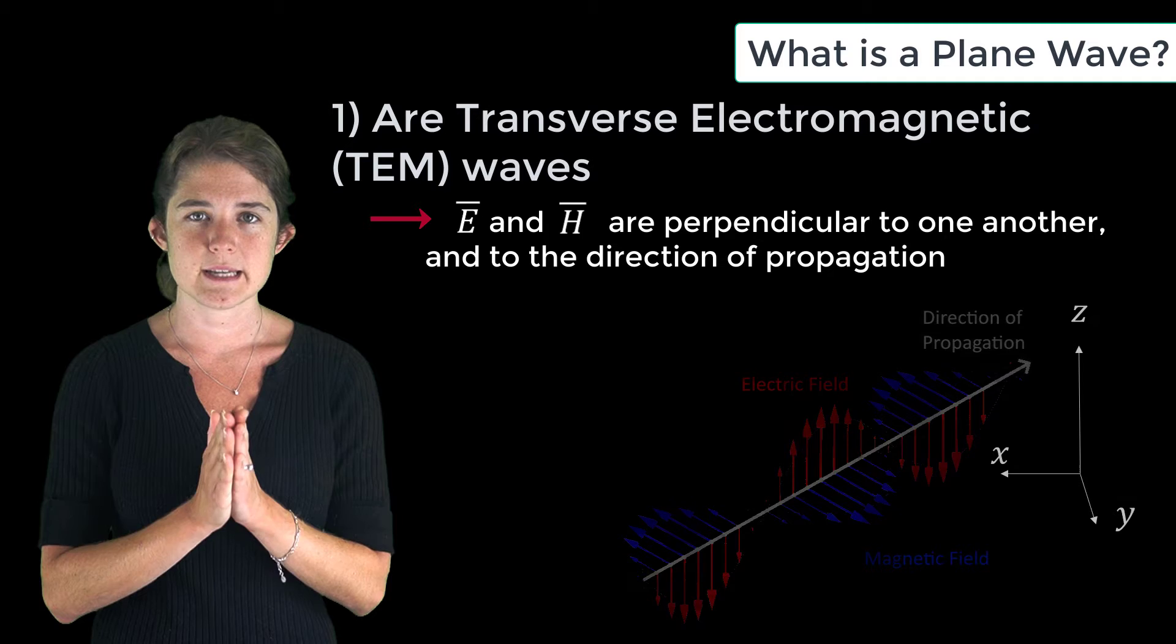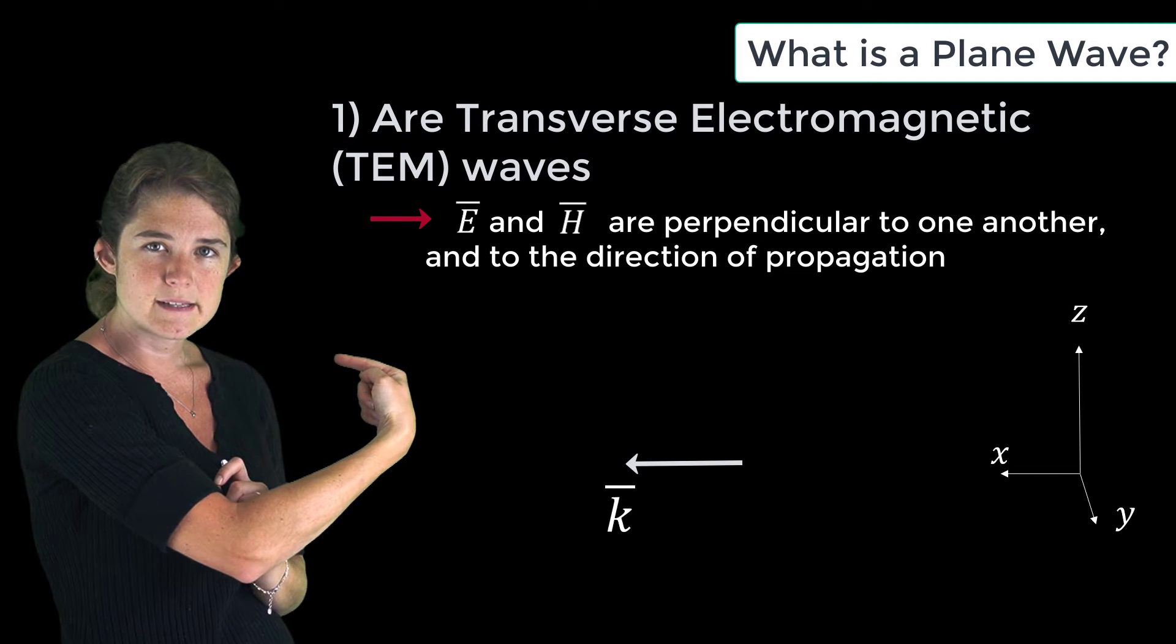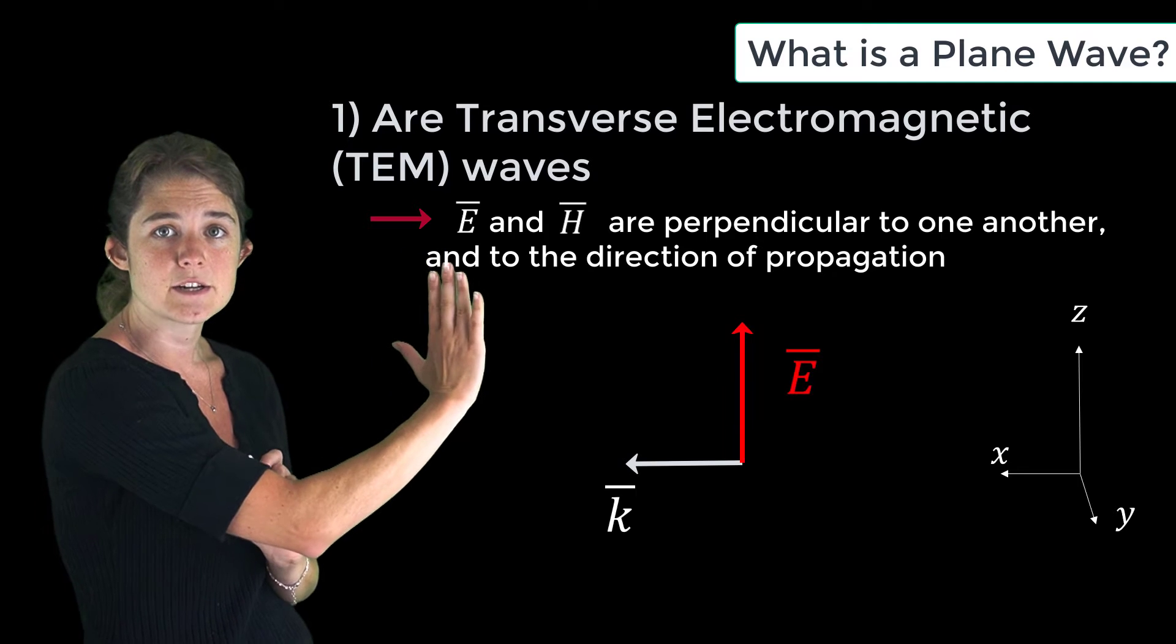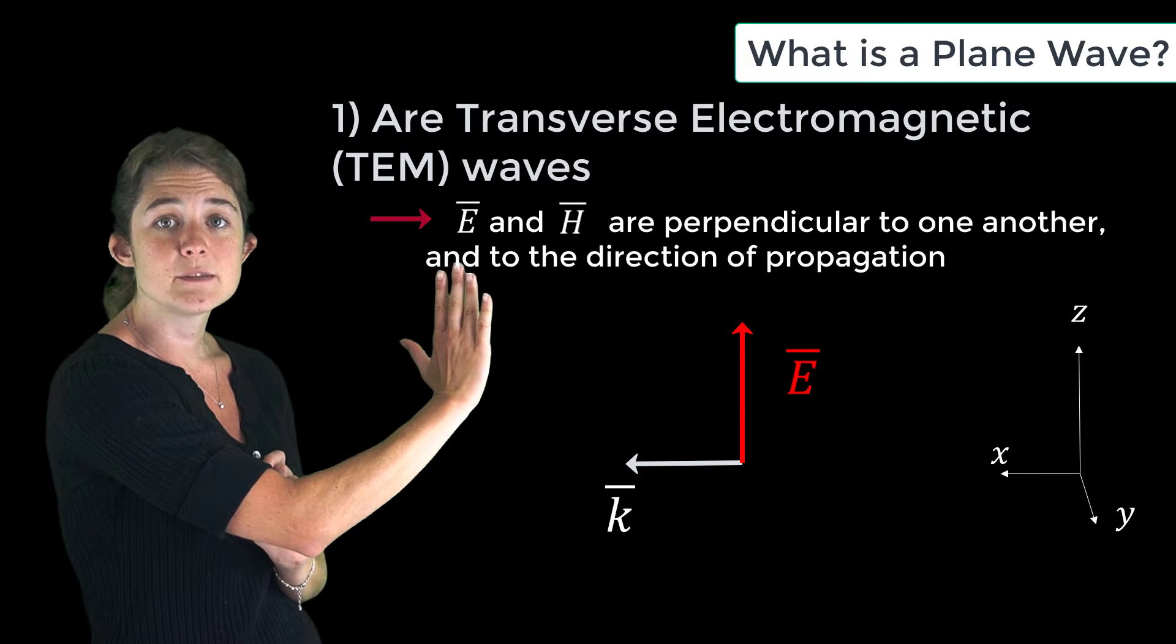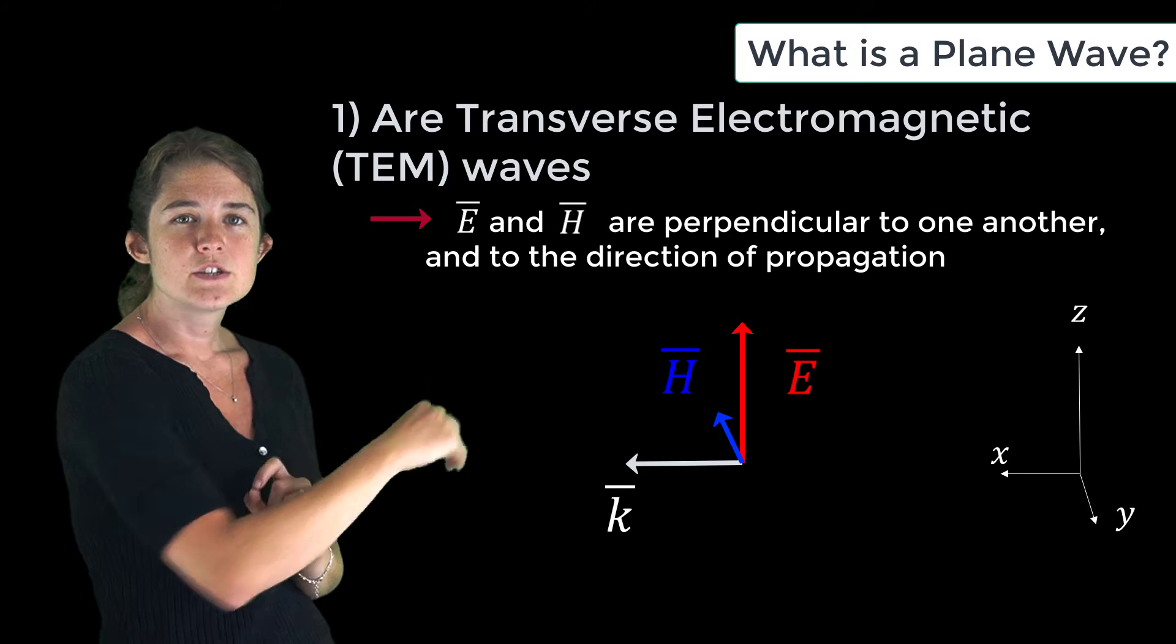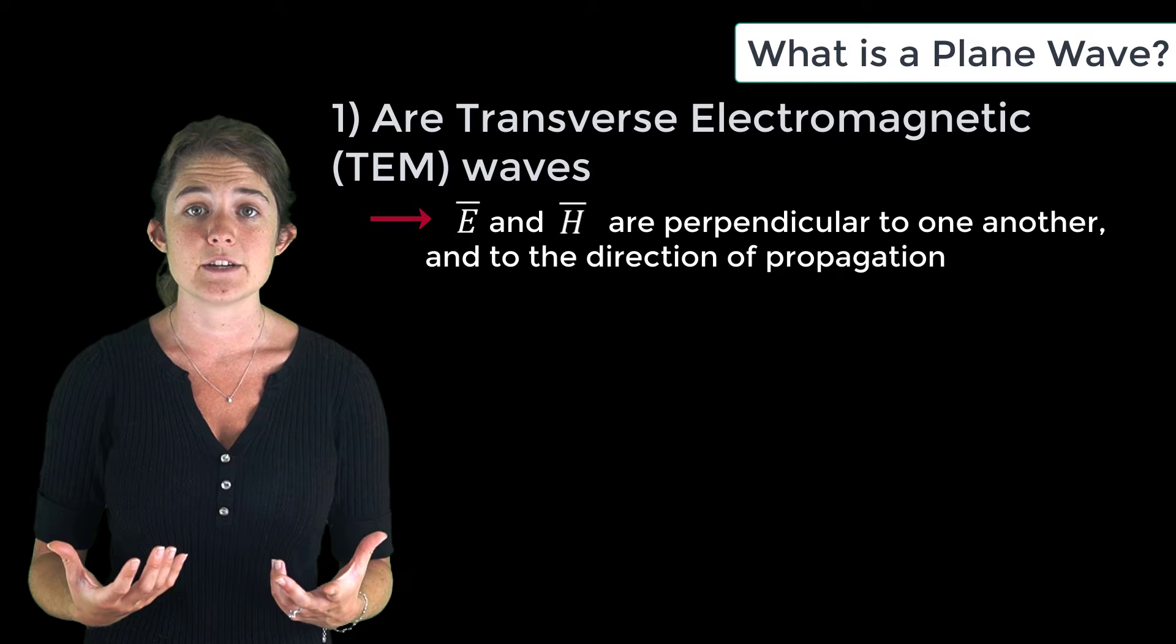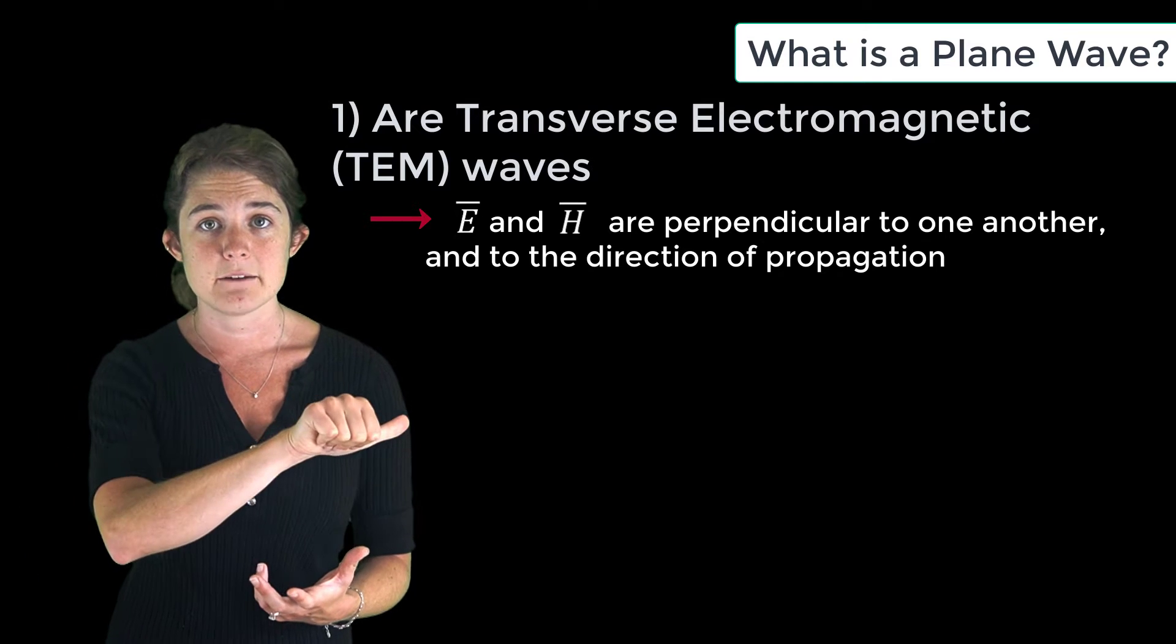In other words, if you know that a TEM wave is traveling in the positive x direction and that its electric field is pointing in the z direction, then you also know that its magnetic field is pointing in the negative y direction. So to say that a wave is TEM constrains the relative orientation of its E, H, and k vectors.